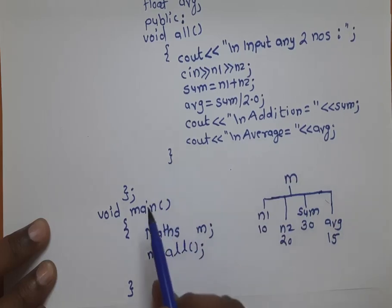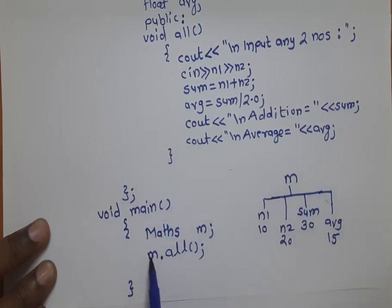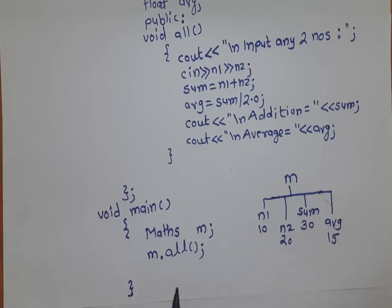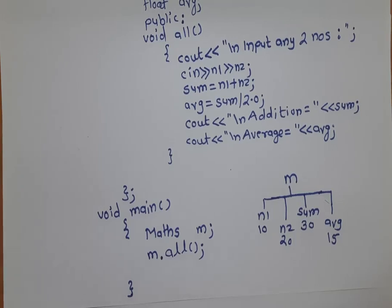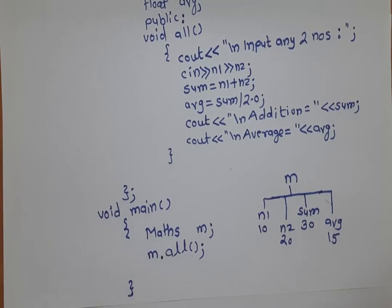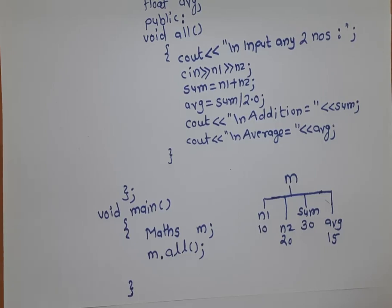End of the member function, it comes back to the calling program, then reaches the end of the program. It gives you addition equal to 30 and average equal to 15, just like your C programming. This is the first simple program of the object oriented programming system.